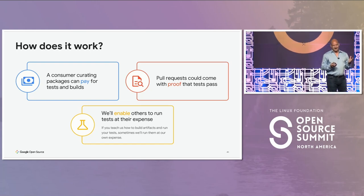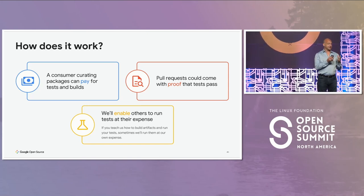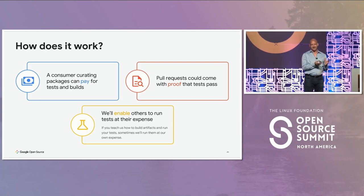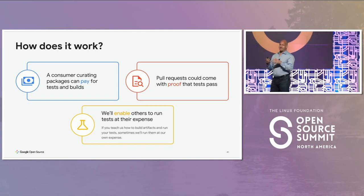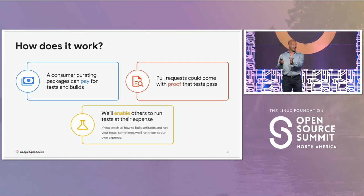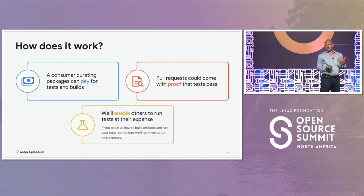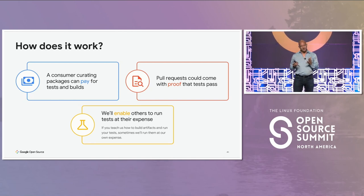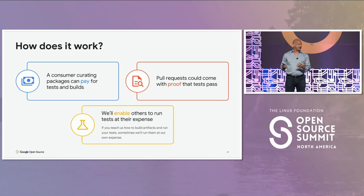Signs that we'd be on the right track: someone who wants to use a package and curate it for their use case can actually build and test it themselves easily without knowing much about the project. Most teams are using thousands of packages — they can't possibly understand them all in detail. It would be really nice if, when sending a pull request, I could actually prove it passed your tests. With automated builds and tests I could get them signed, and you'd say: I'll take this pull request more seriously because I know it already passes my tests.